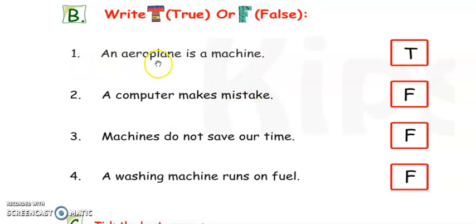Number 1. An aeroplane is a machine. Yes. Aeroplane is a machine. It runs on fuel. It is a machine. So, the answer is right. Answer is true. And for True, you have to write here T.